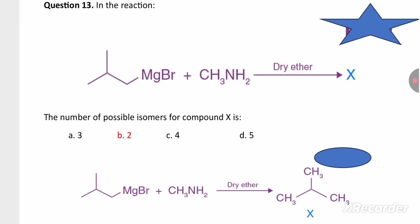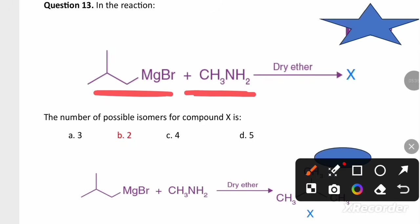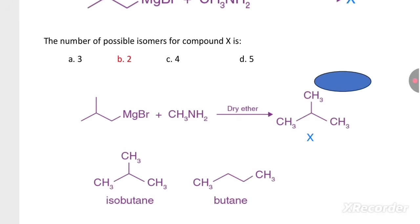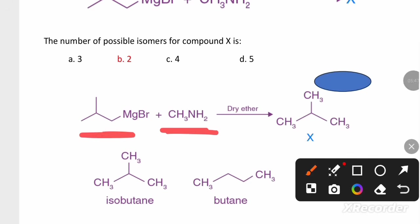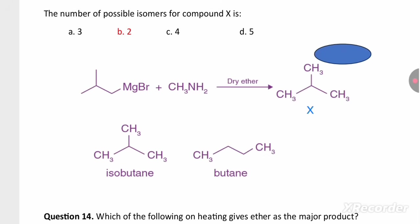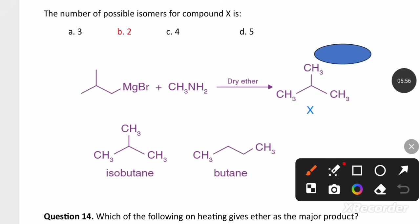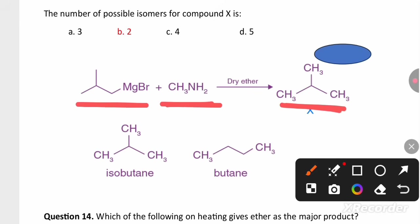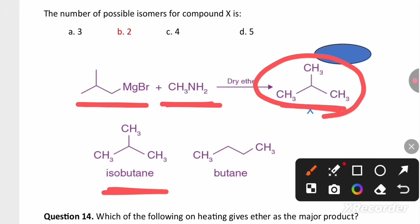The next question involves a reaction of a Grignard reagent with a primary amine in the presence of dry ether. This will produce a hydrocarbon, specifically an alkane. The Grignard reagent on reacting with methanamine in dry ether produces isobutane (2-methylpropane). One more isomer of isobutane is butane, so it can possibly form two types of chain isomers.